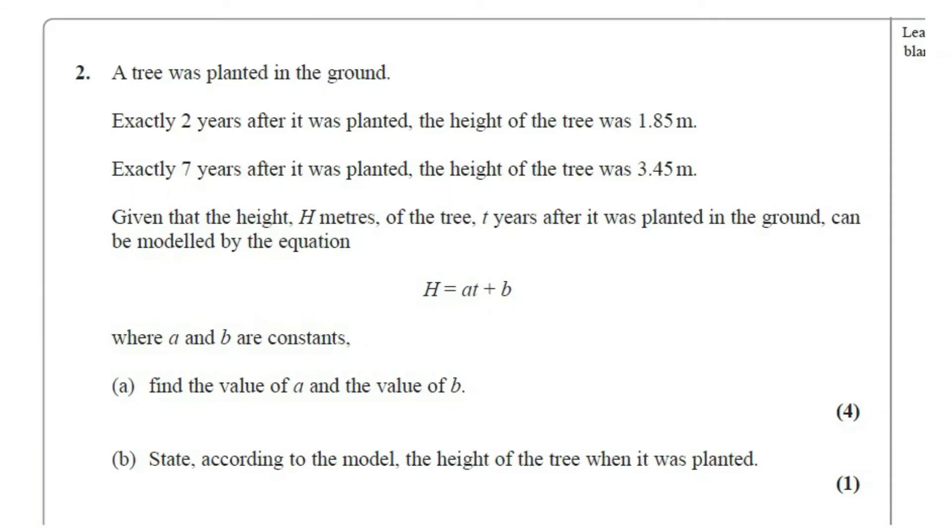Question number two: A tree was planted in the ground. Exactly two years after it was planted, the height of the tree was 1.85 meters. Exactly seven years after it was planted, the height of the tree was 3.45 meters.